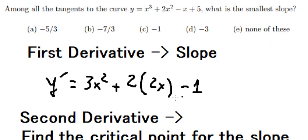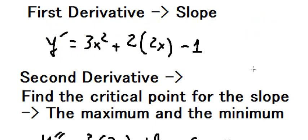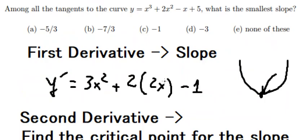We put this value in the first derivative because this is about the minimum slope. Why? This is a parabola. If you look carefully it will be like this. We want to find the smallest, so we just put this one in and we can find the minimum value of the slope.